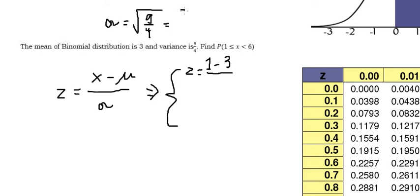This will have 3 over 2. So we put 3 over 2 here and we calculate Z number 1, which is about negative 4 over 3.